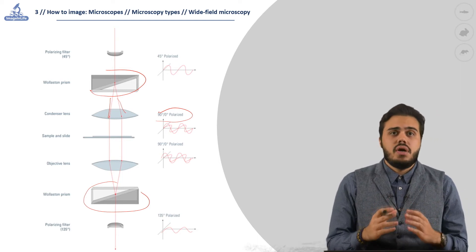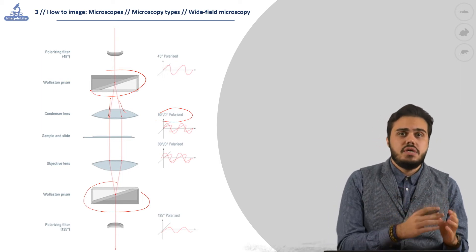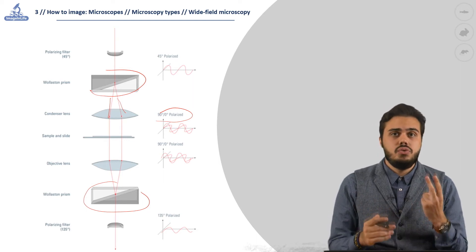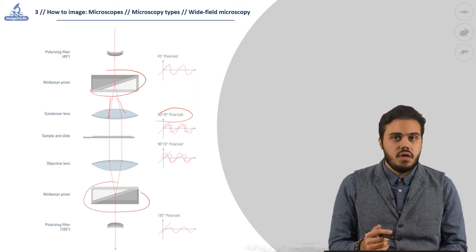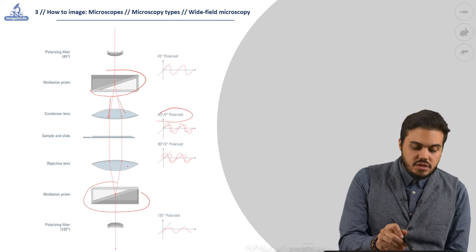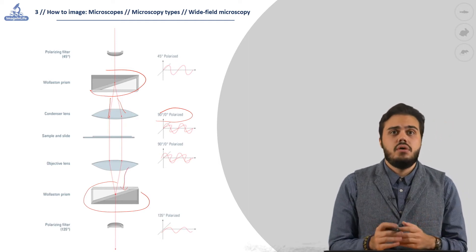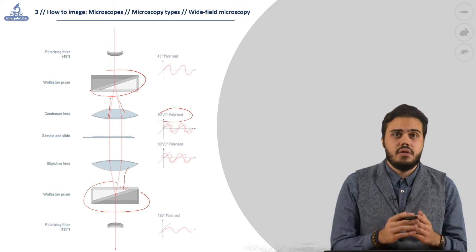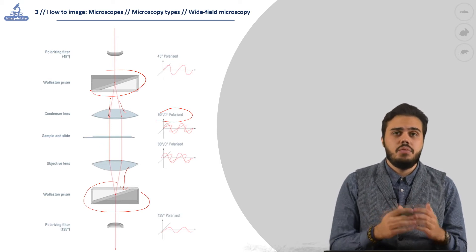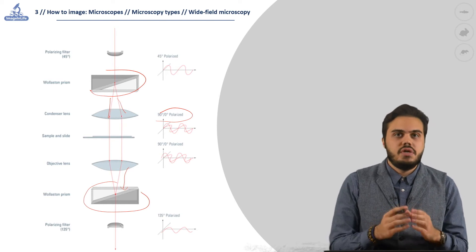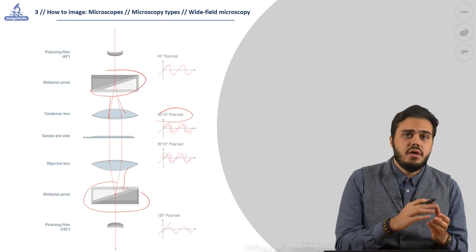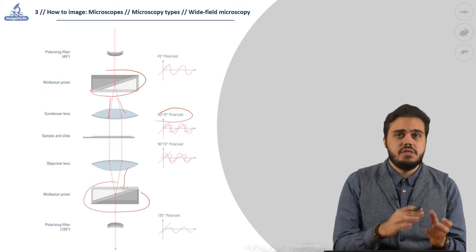When the polarized light waves pass through the specimen, the resulting refracted light is composed of two different bright field images. After passing through another prism, two different refractive indices interact, and according to the difference in optical path length, they produce interference that enhances bright or dark areas of the specimen itself.